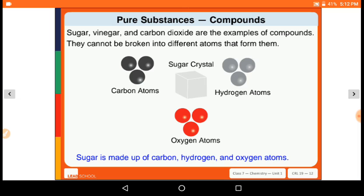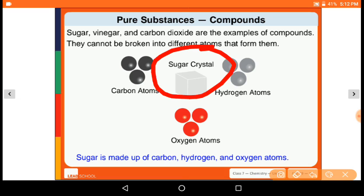Water is made up of hydrogen and oxygen atoms. Sugar, vinegar, and carbon dioxide are examples of compounds. They cannot be broken into the different atoms that form them. Sugar is made up of carbon, hydrogen, and oxygen atoms. You can see here carbon atoms, hydrogen atoms, and oxygen atoms combine together. If they are chemically bonded, we get sugar crystals.